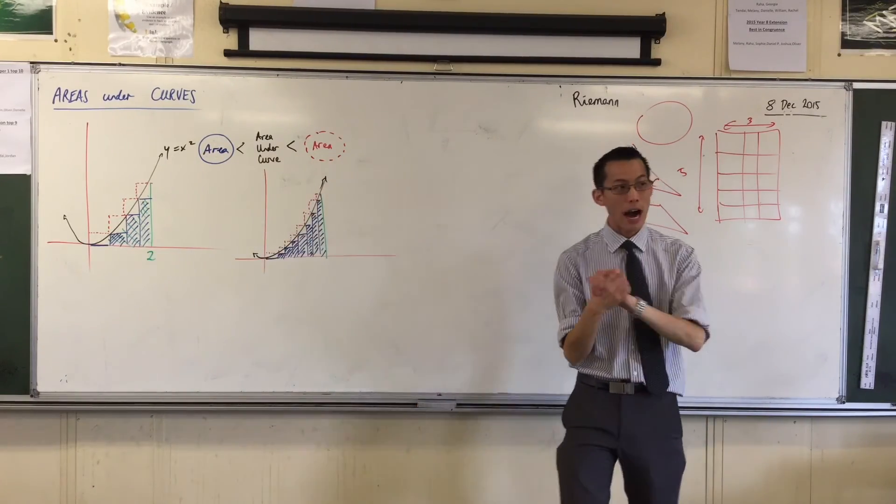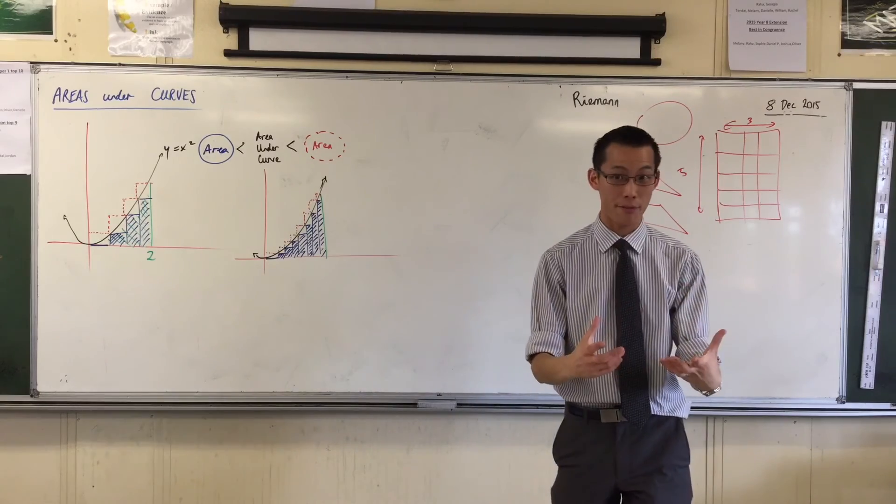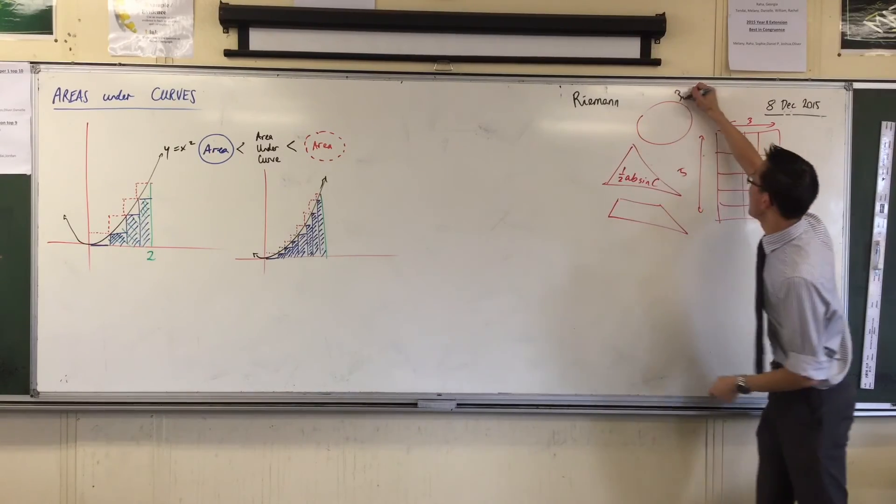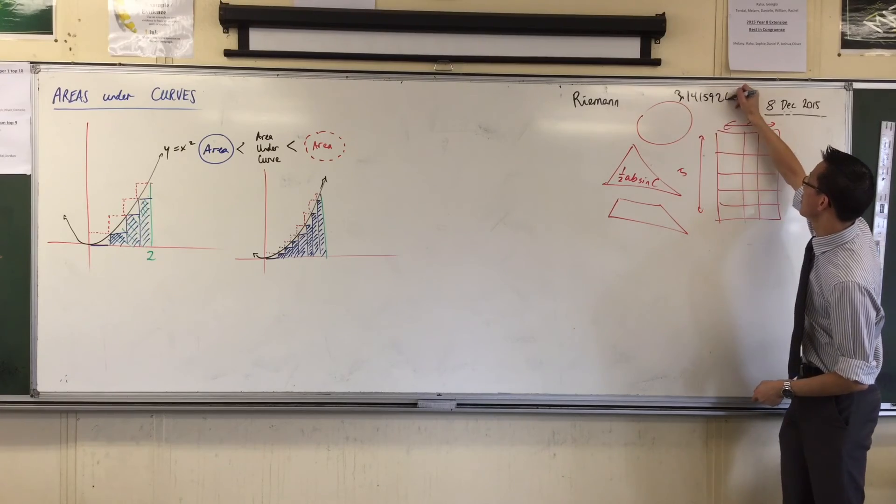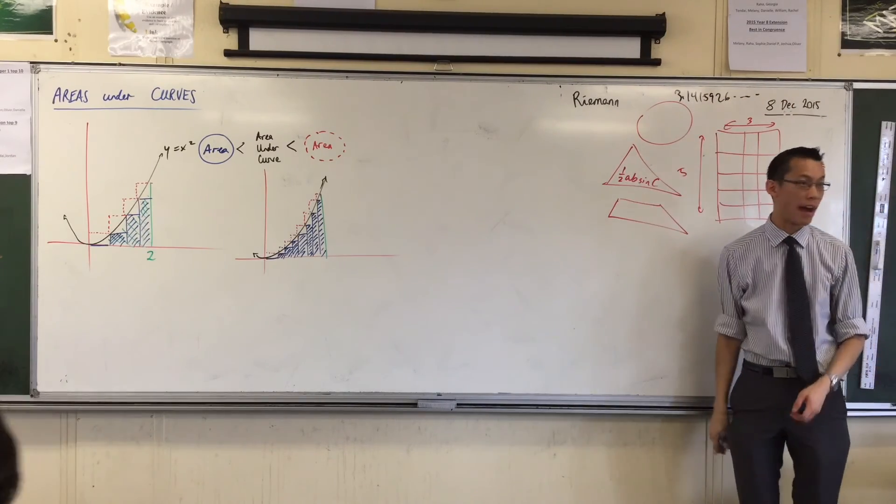Now, an engineer would say, look, I just need this to be close enough. Close enough. Like, people say, oh yeah, you know, I know 50 million, billion, whatever, decimals of pi.